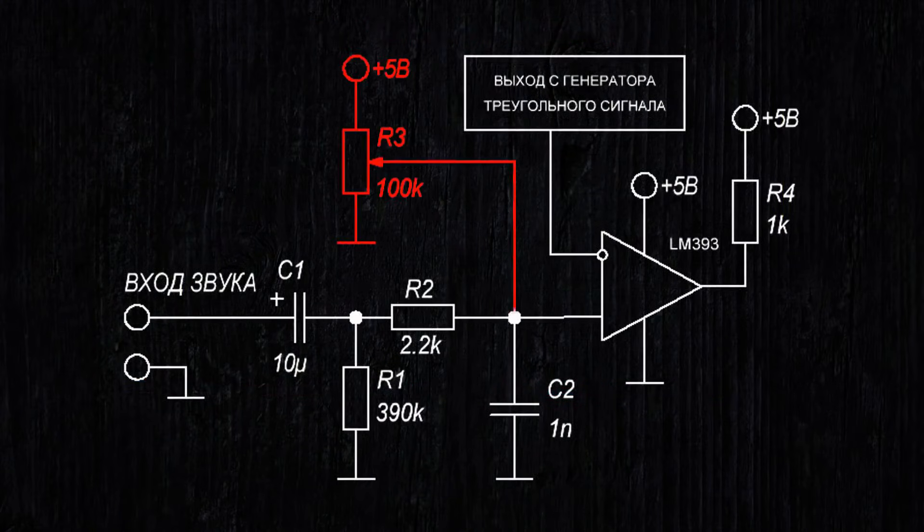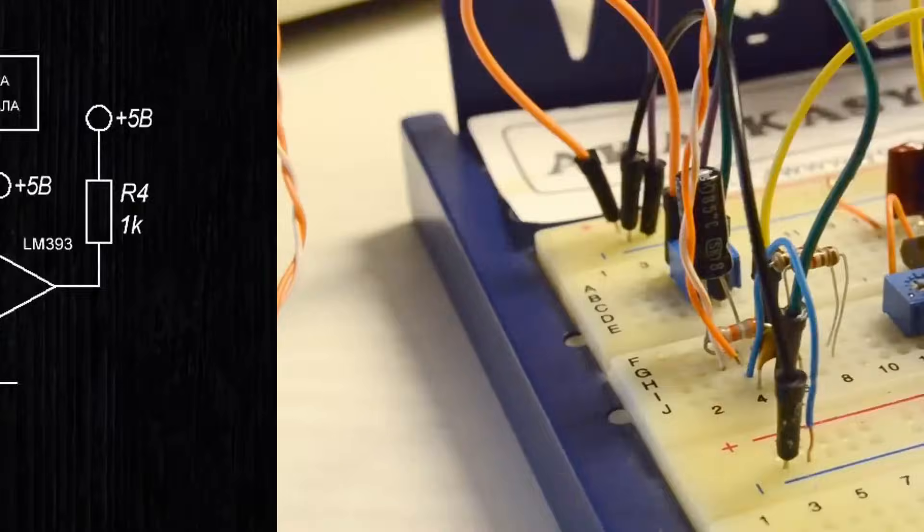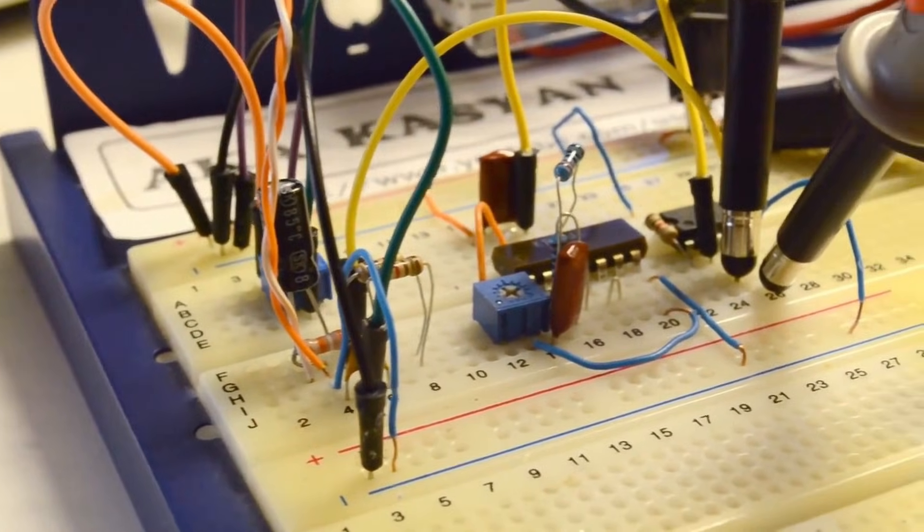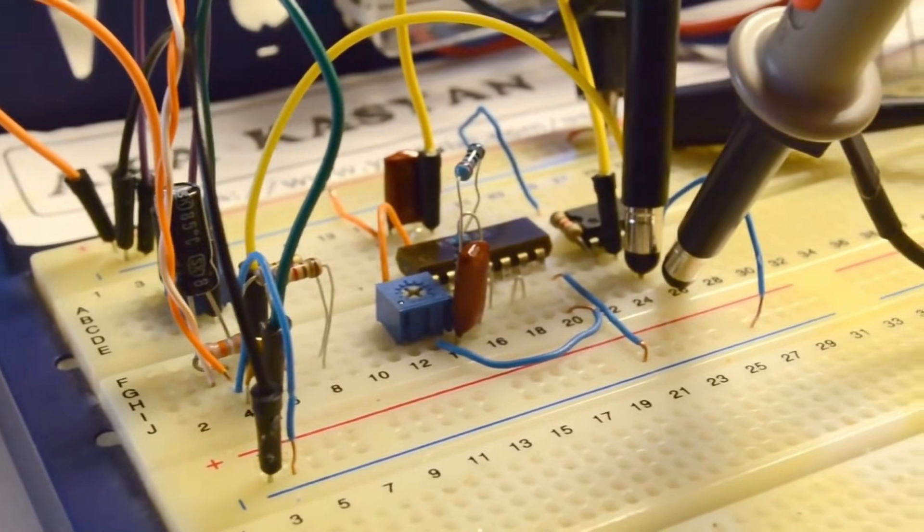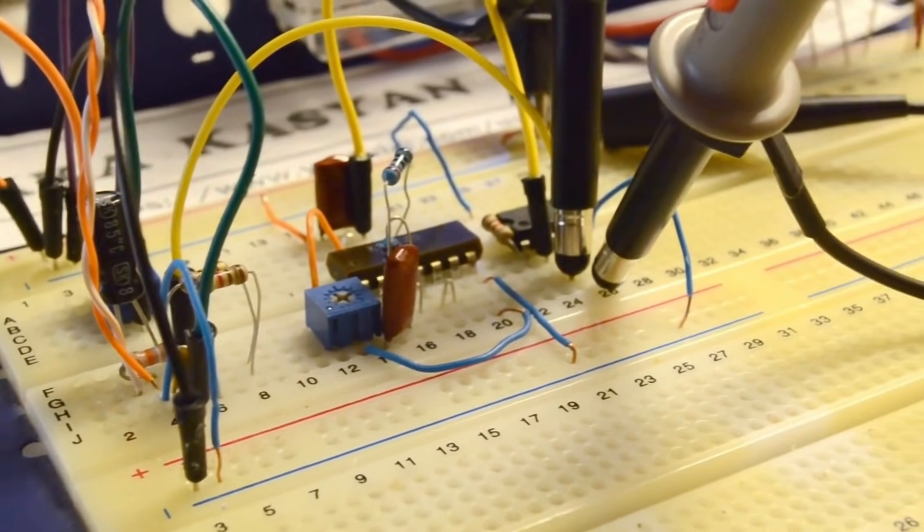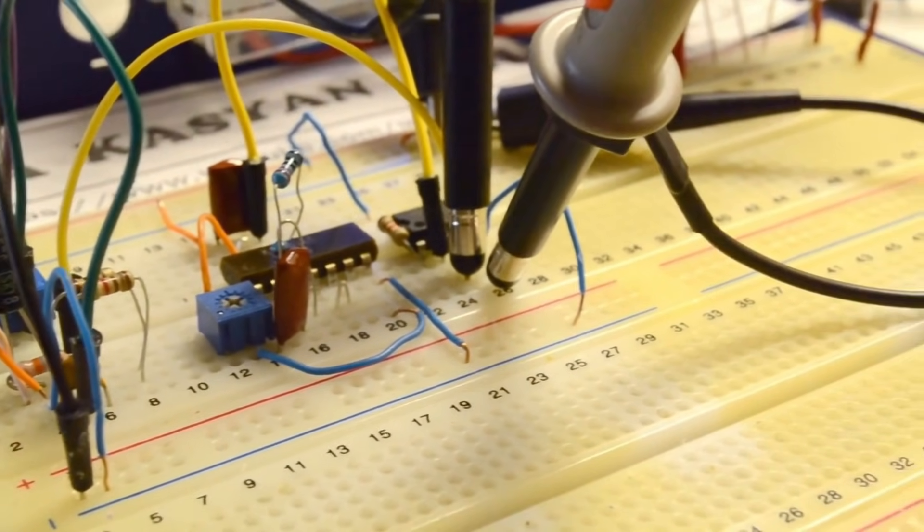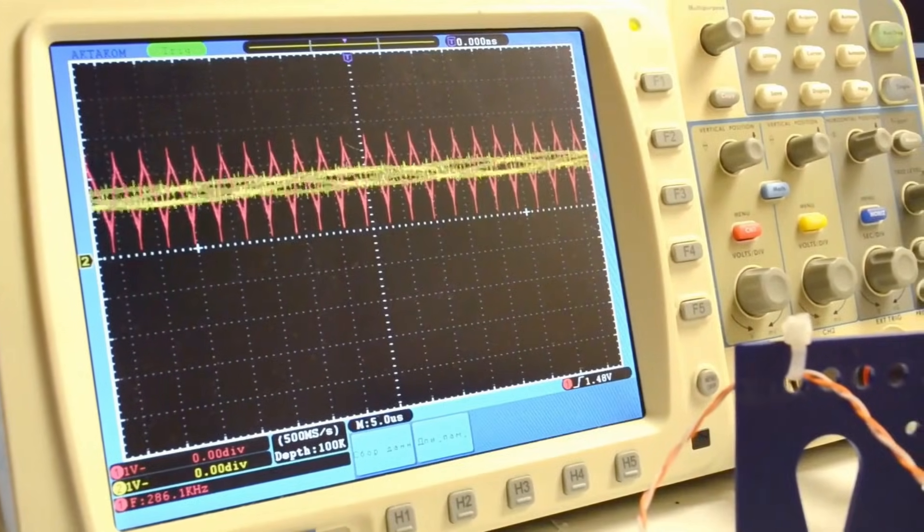A constant offset needs to be mixed into the low-frequency signal so that the comparator works properly with single-polarity power. Don't forget to pull up the comparator's output to the power supply through a resistor because the output of the LM393 has an open collector.